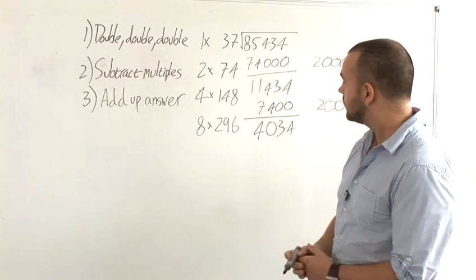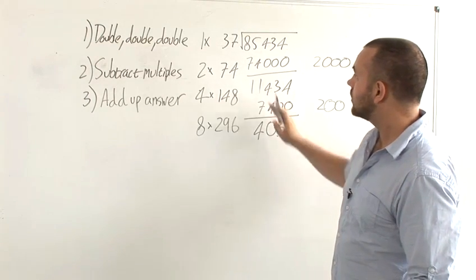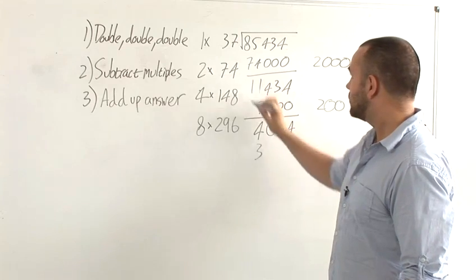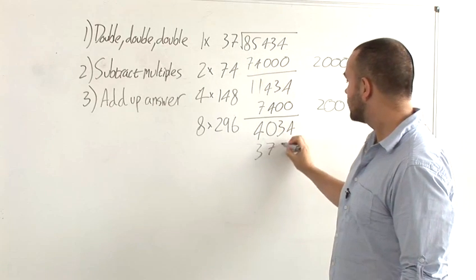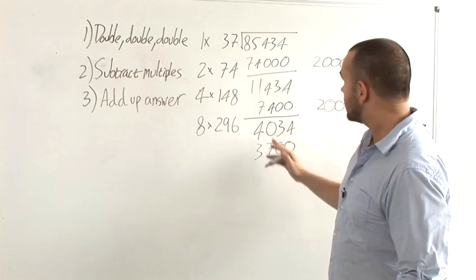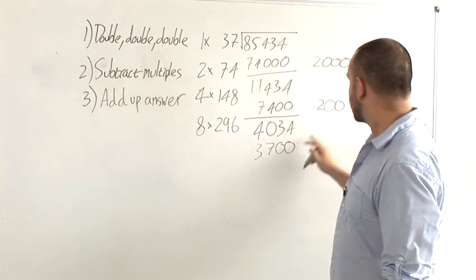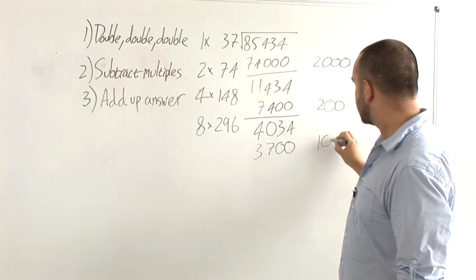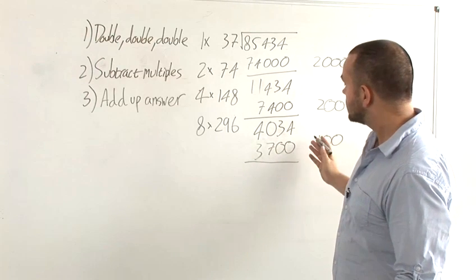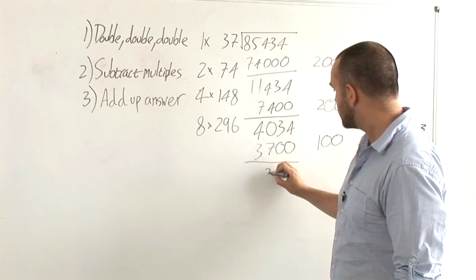And you carry on in this fashion. 4,034, you would pick this number here, 37. Again, you've chosen the first number multiplied by 100, so 100 goes there. Subtract gives you 334.